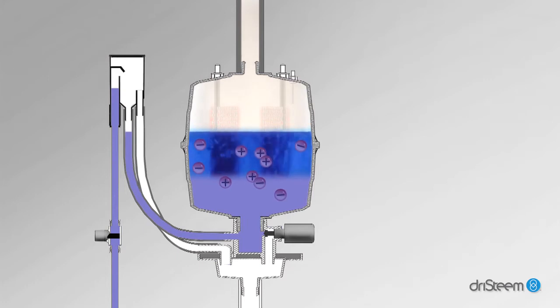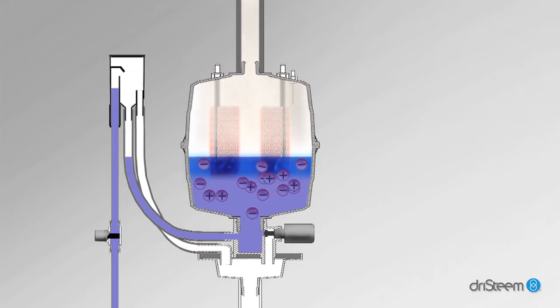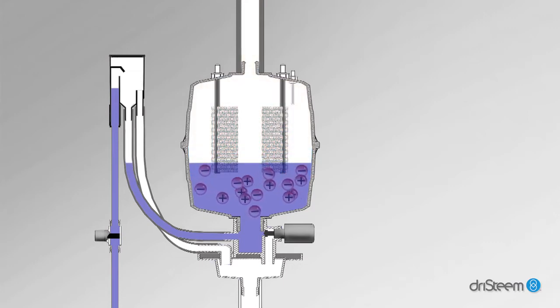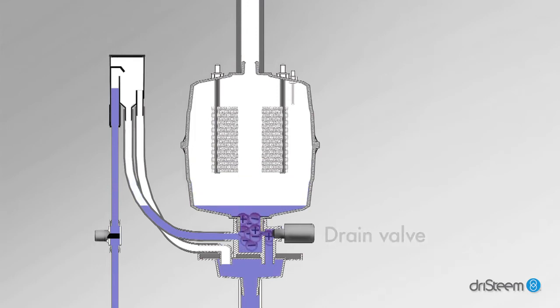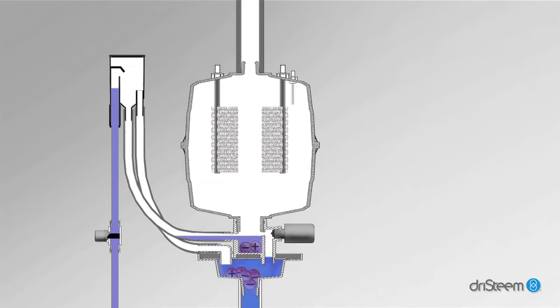As water boils away, the concentration of conductive ions in the water increases, which increases electrical current through the water. At some point, the controller must reduce water conductivity by opening the drain valve and flushing the overly conductive water, then replacing it with fresh fill water.